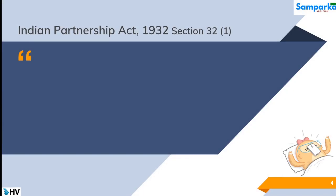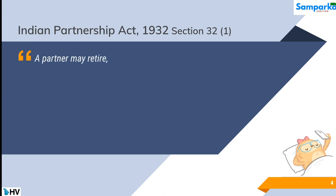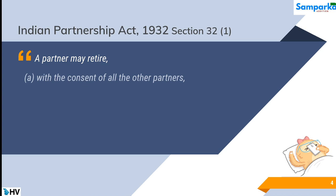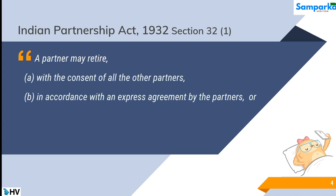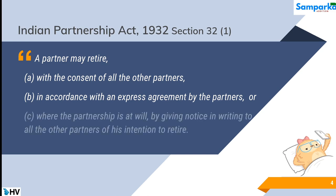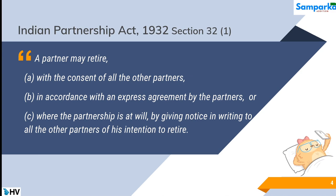Indian Partnership Act 1932, Section 32(1): A partner may retire with the consent of all the other partners, in accordance with an express agreement by the partners, or where the partnership is at will, by giving notice in writing to all the other partners of his intention to retire.